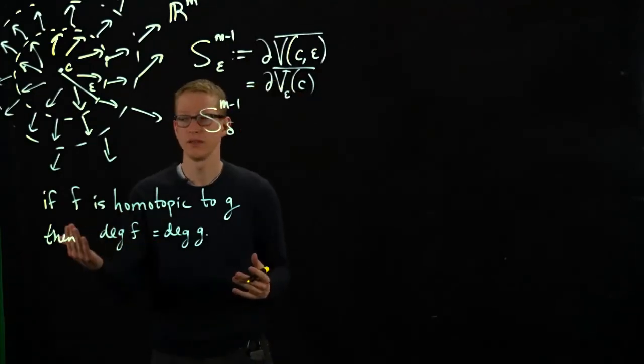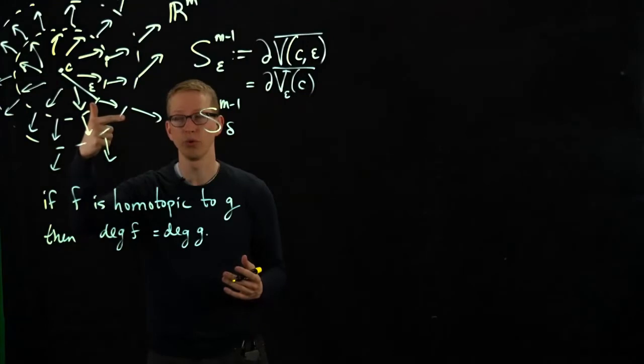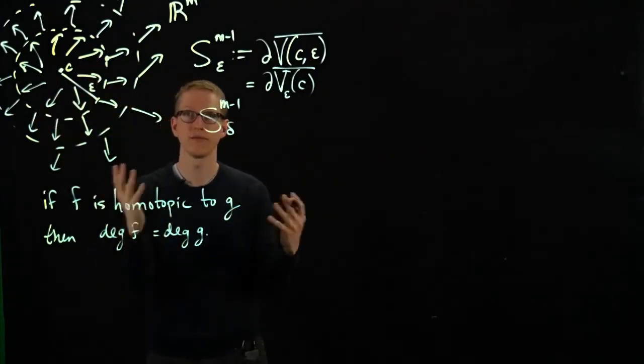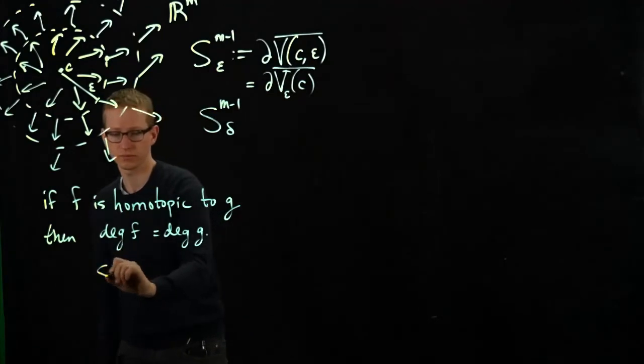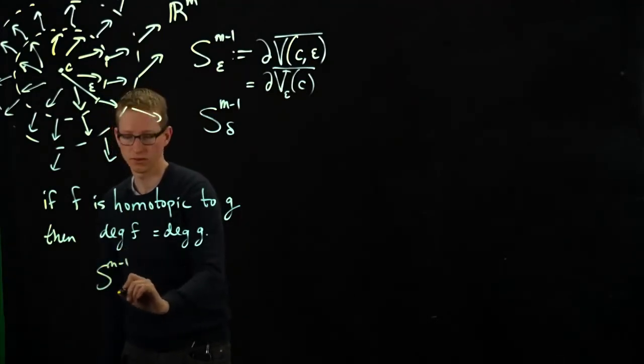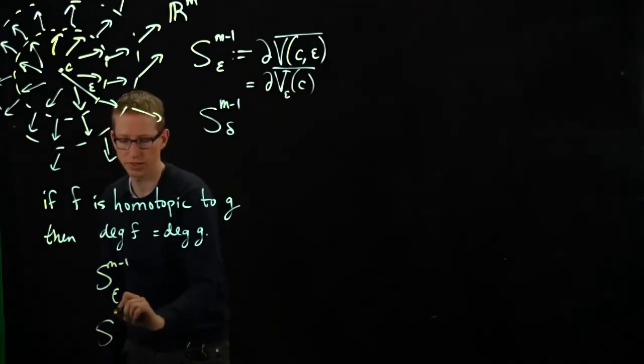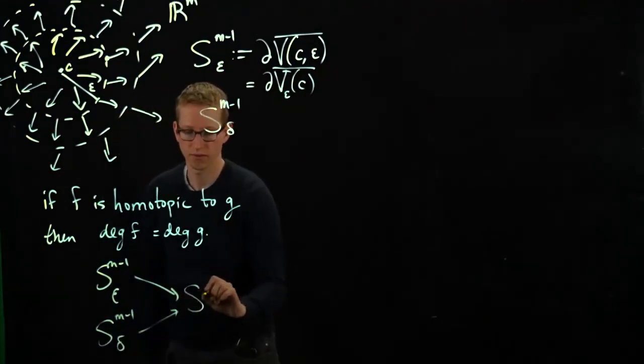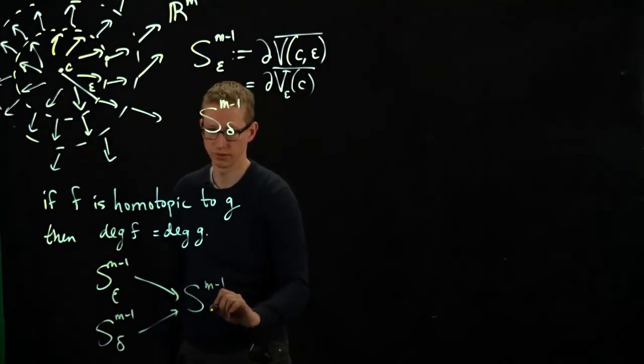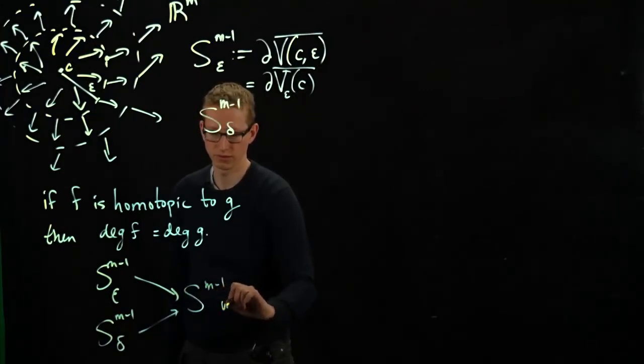By scaling the vector at these different points along the sphere and getting a map from these spheres to the unit sphere, we sort of have the following picture. We have two functions from this sphere to the unit sphere. This is the unit sphere.